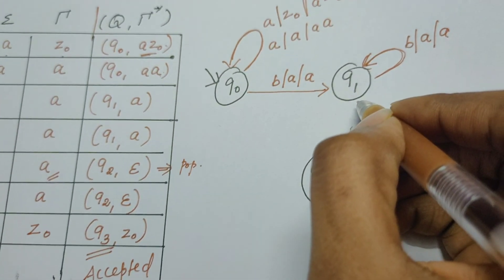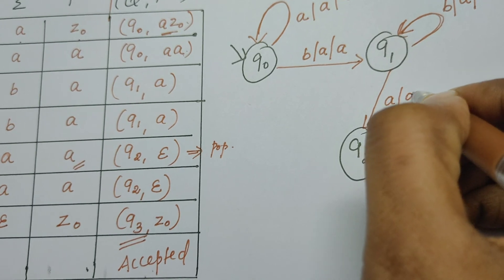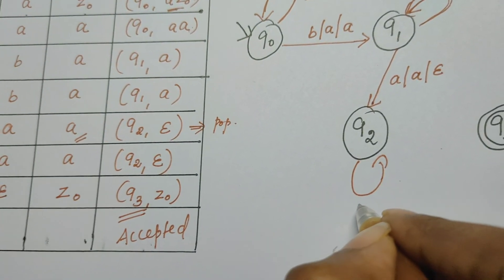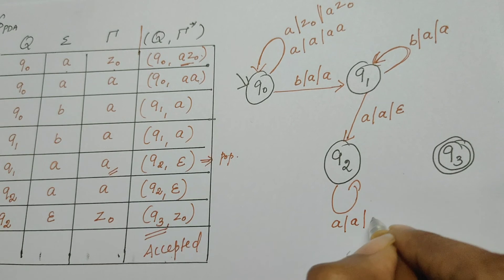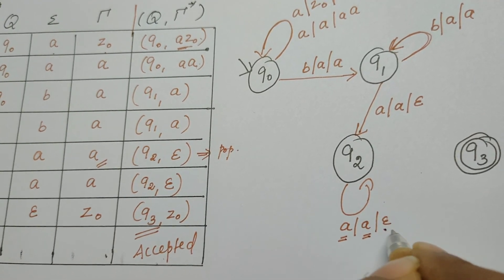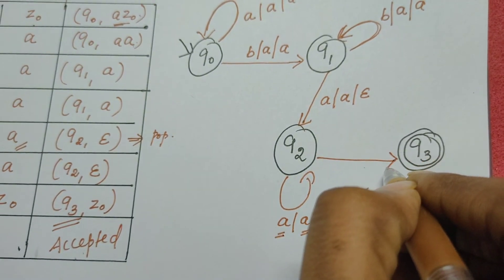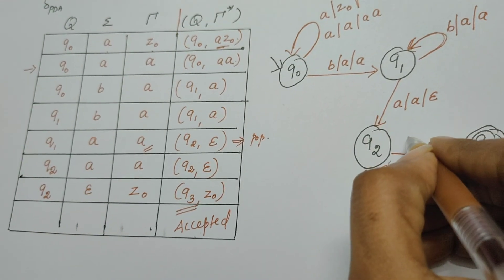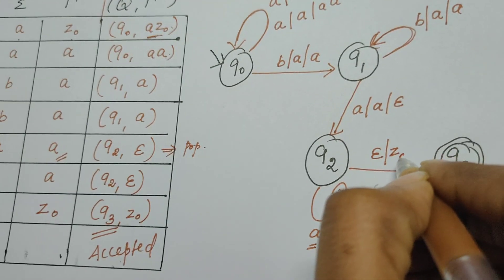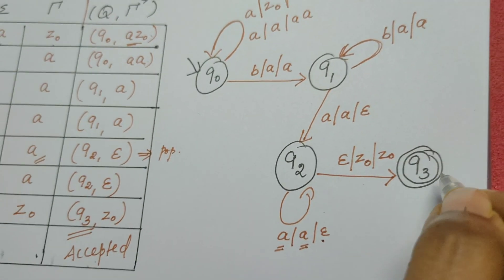From q1 transitioning to q2: when it reads a, the expected symbol at the top of the stack is also a — pop that symbol. It may continue to stay in q2 reading the remaining a's, and every time it reads a, the top of the stack must be a — replace the top by epsilon, which is the pop operation. From q2 the PDA enters the final state q3 when it reads epsilon, meaning it has reached the end of the string. At that point the stack must be empty — z0 always indicates the emptiness of the stack — retain z0 and enter q3.